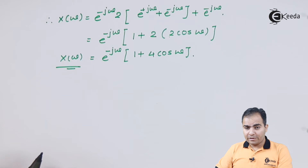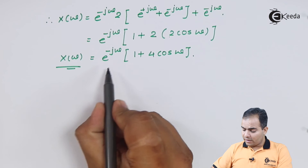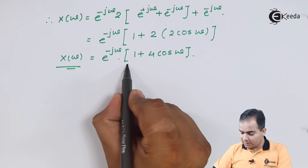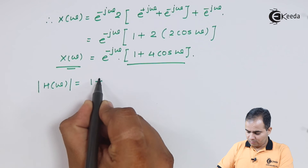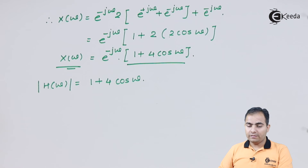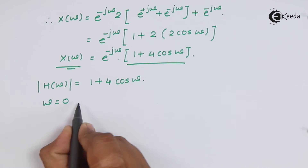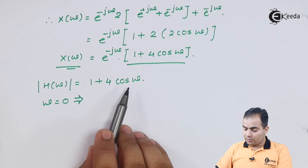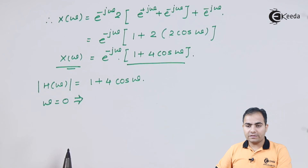The magnitude response is |1 + 4 cos omega|. Now I'll substitute the omega values. Substituting omega equals 0: cos of 0 is always 1, so 1 times 4 is 4, and 4 plus 1 equals 5. So the magnitude response at omega equals 0 is 5.